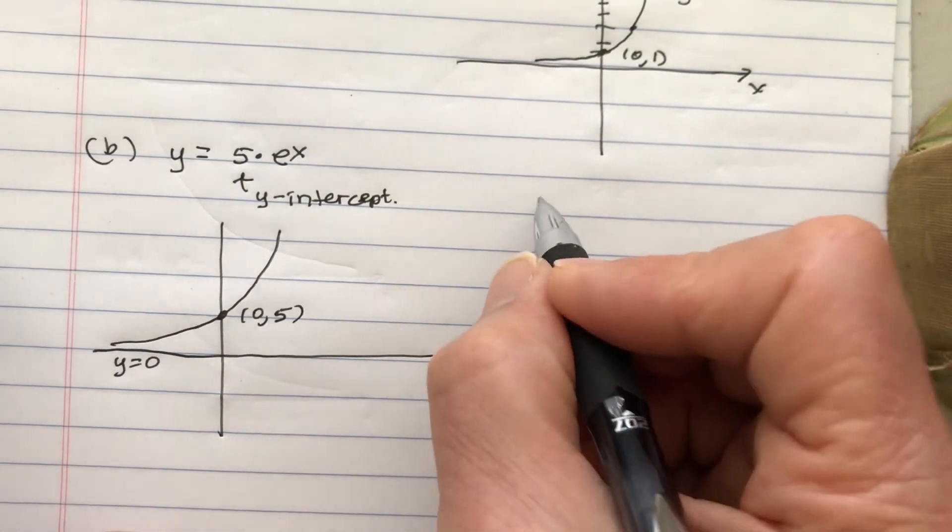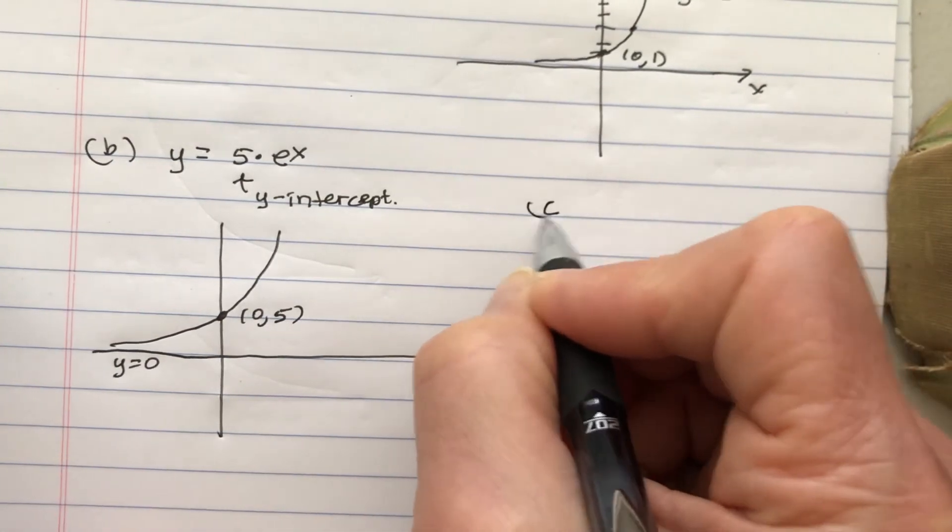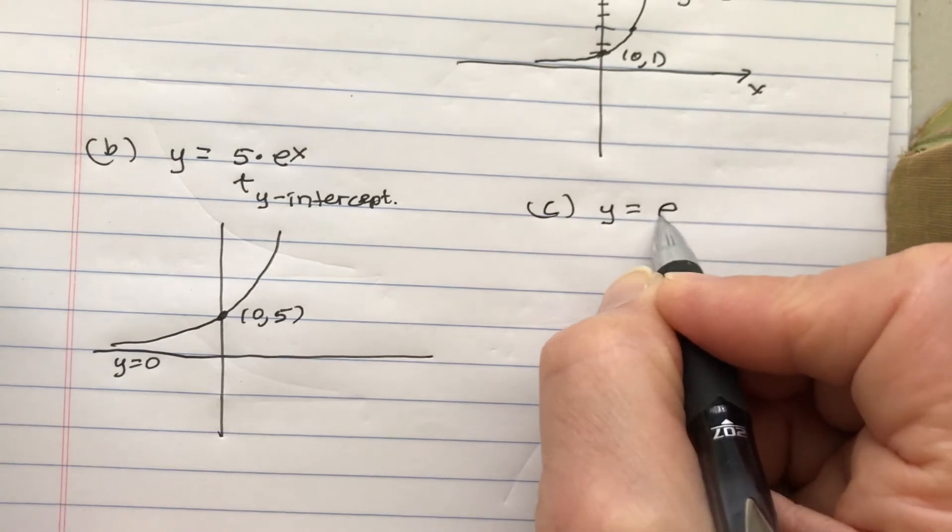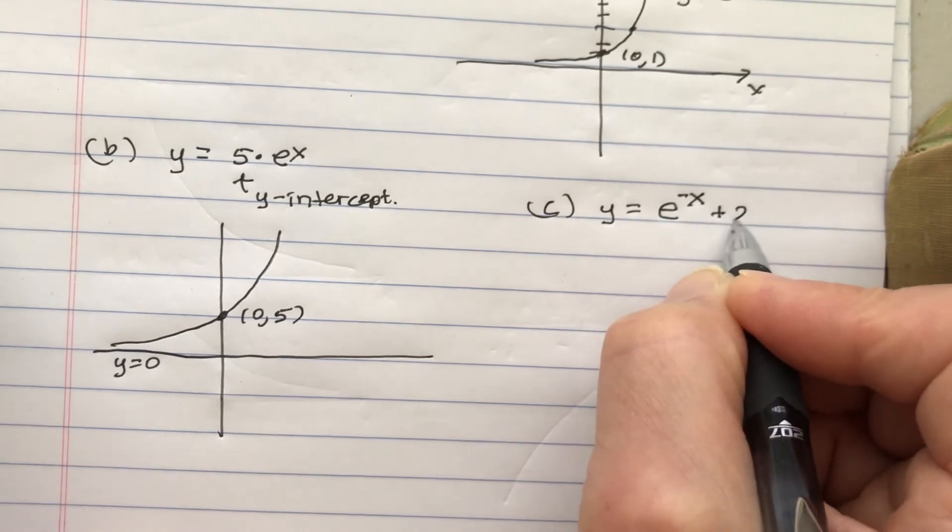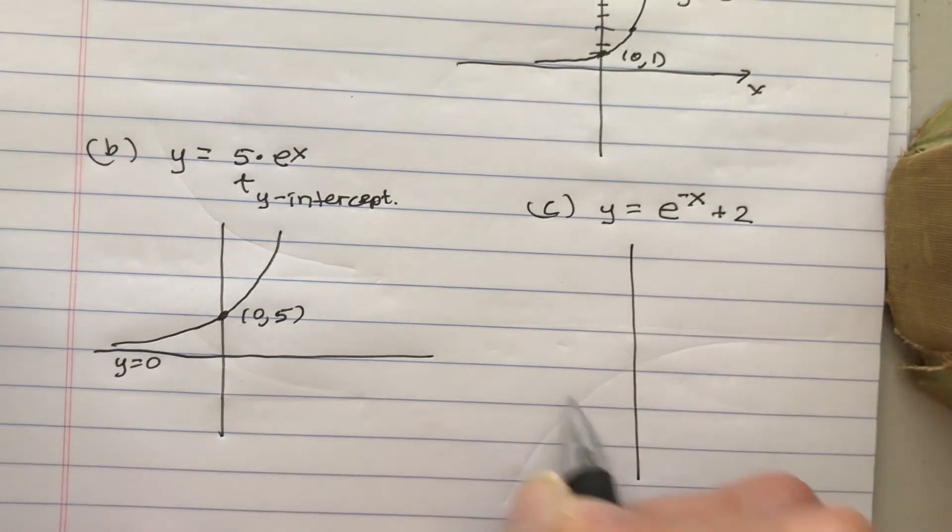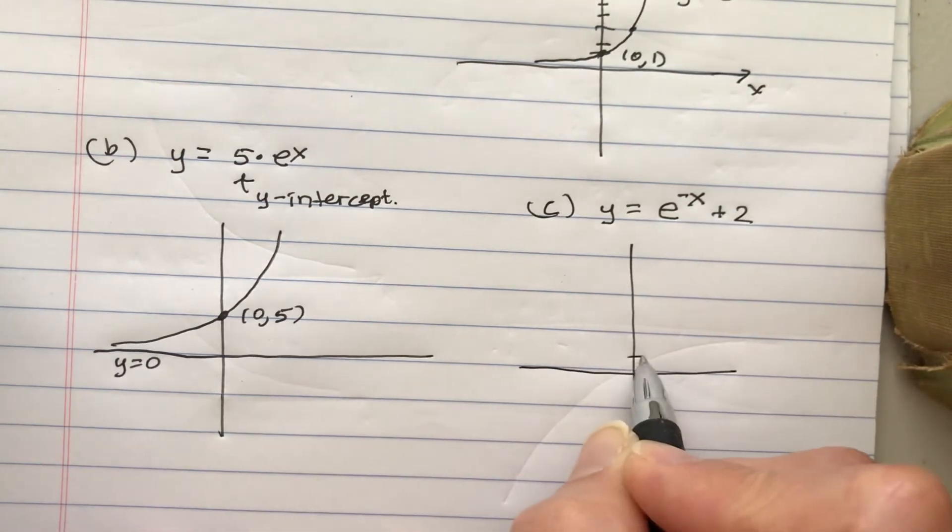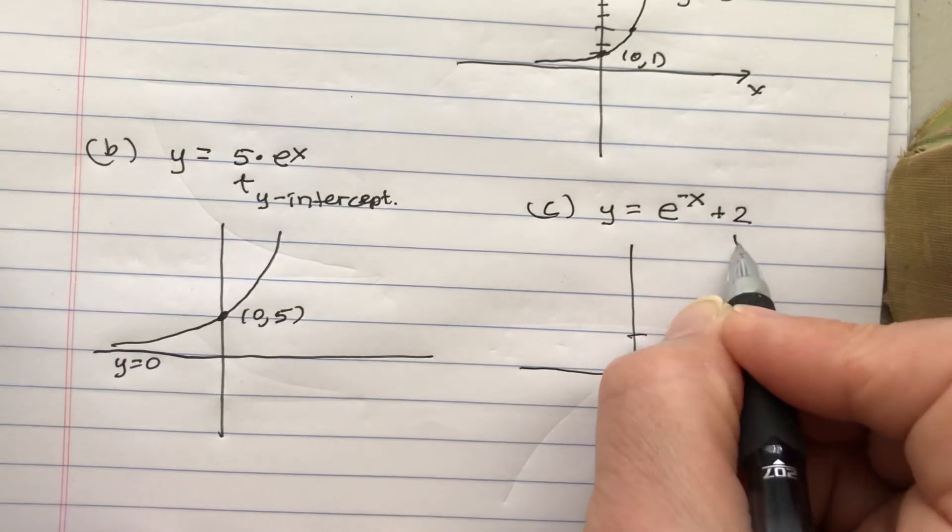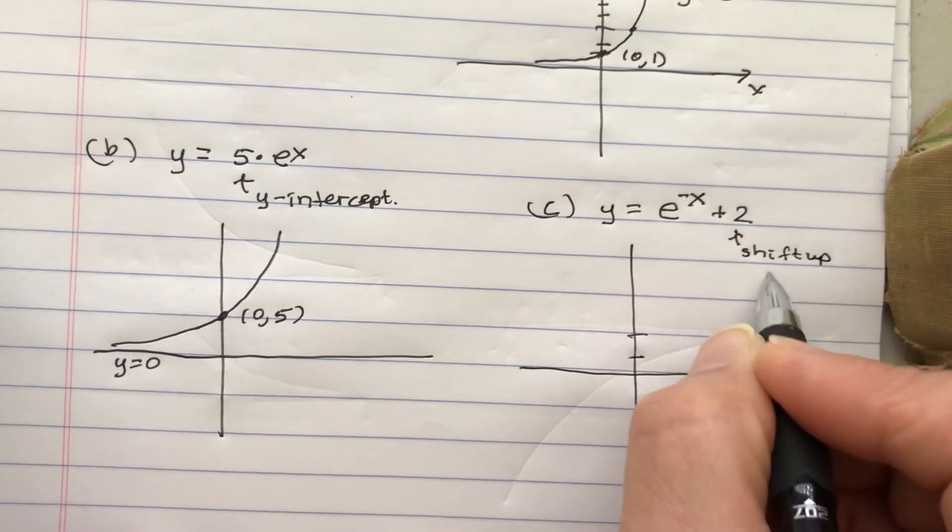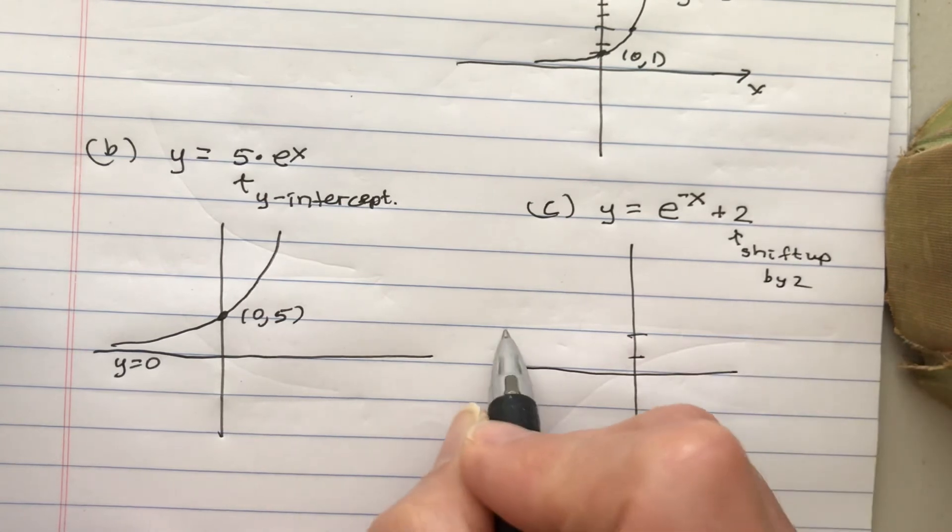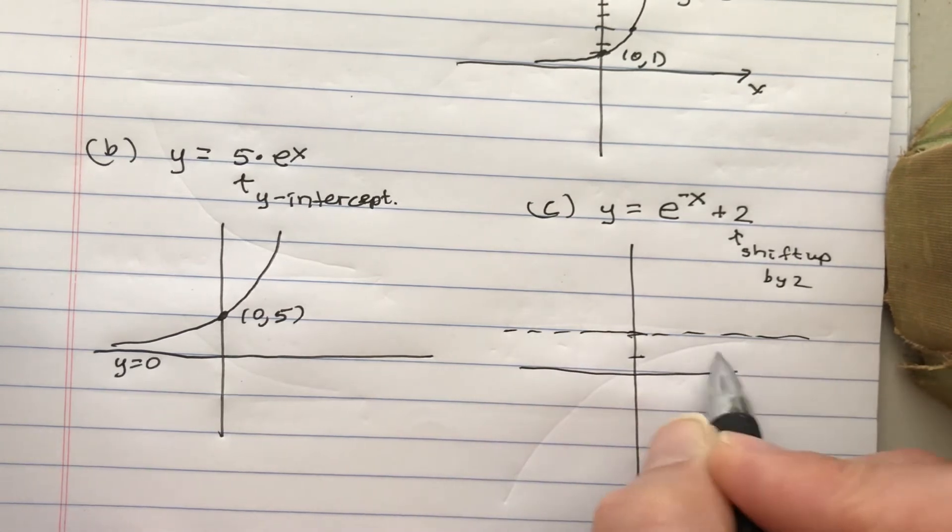Okay, let's do another one. Let's do C. Y equals e to the negative x and let's add 2 to that. Okay. So what is this going to do? This is going to give us a shift up by 2, and what will that do? That will change the horizontal asymptote.